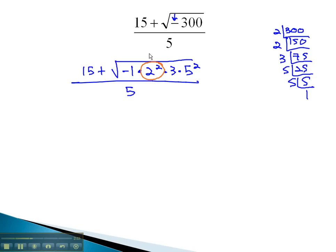We can take the square root of 2 squared is just 2, the square root of 5 squared is just 5, and also now we know the square root of negative 1 we have defined as i. This means we now have 15 plus 2 times 5, or 10i, and left inside the square root is 3 over 5.